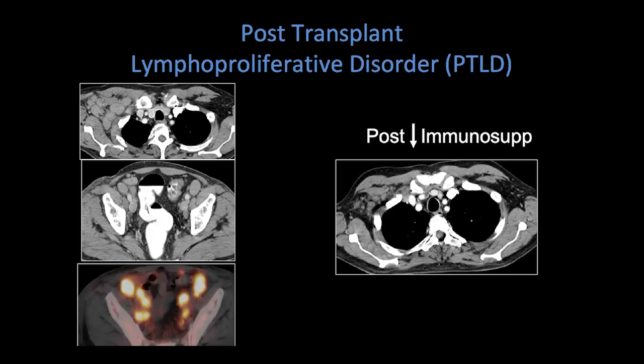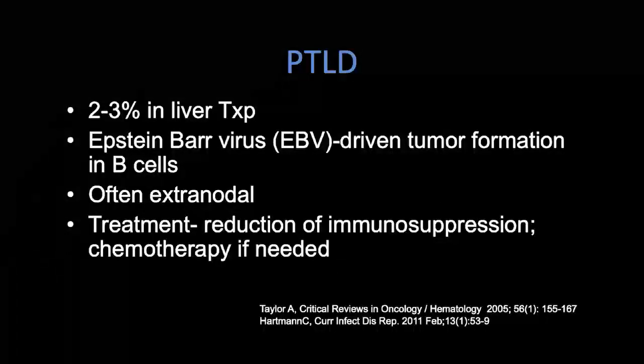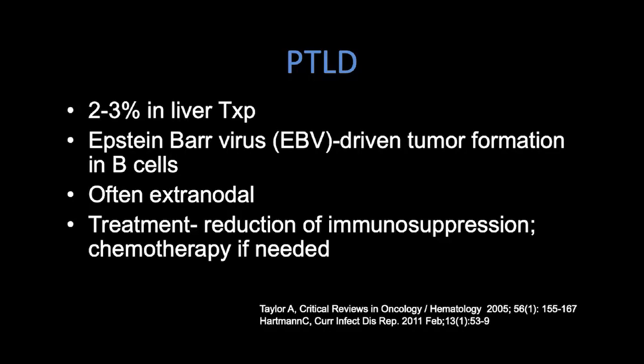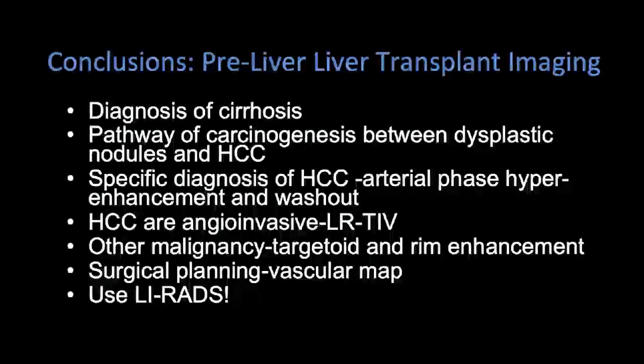Think about PTLD when you see somebody with enlarging lymph nodes or enlarging heterogeneous masses outside of the usual nodal stations. Remember that it's rare but it's associated with Epstein-Barr virus — it's a really interesting concept because the EBV virus drives the tumor due to immunosuppression. Once immunosuppression is reduced, the EBV is under better control and they may not need chemotherapy.